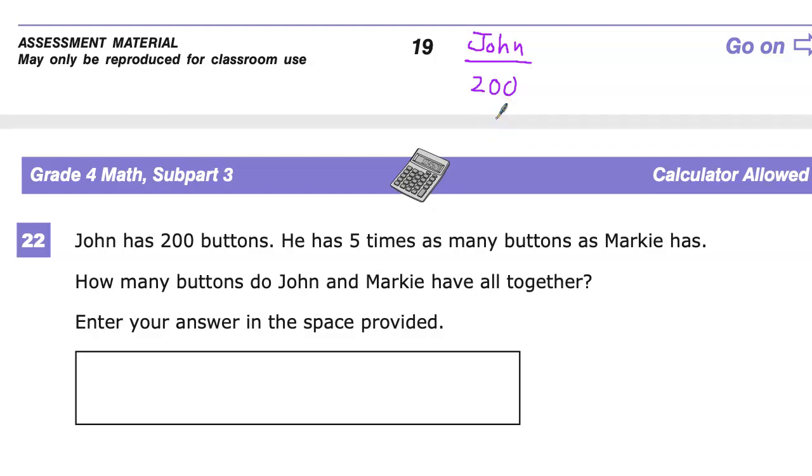He has five times as many buttons as Markie has. Here's the thing about this: John has five times the amount that Markie has. This actually matters a lot because it's a matter of perspective. Markie has less than John, so we have to work it backwards.